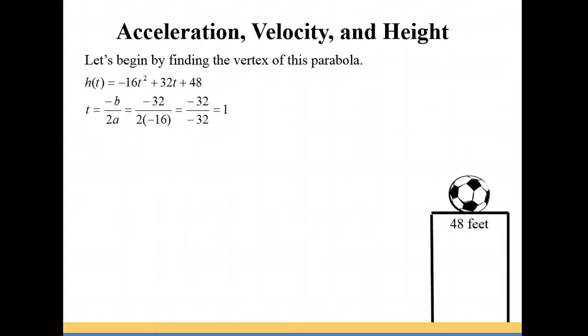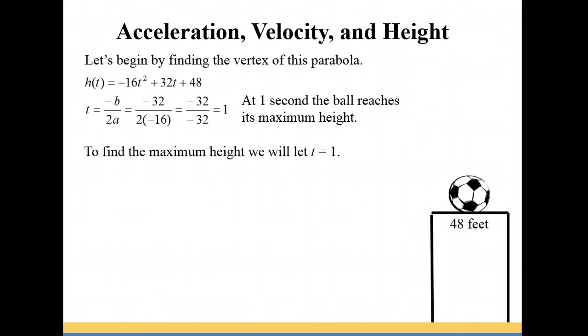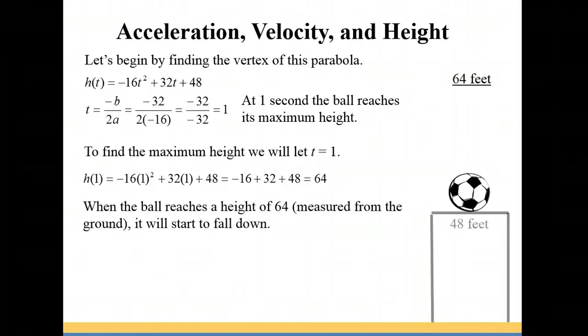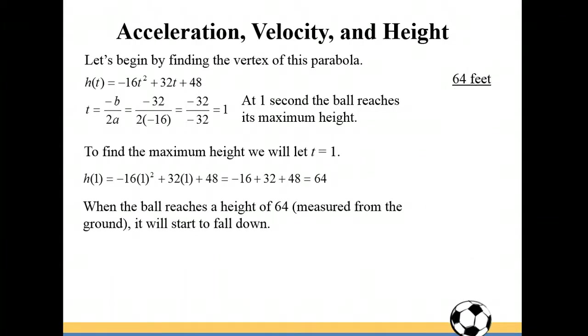Remember this is a quadratic with a leading coefficient that's negative. So your parabola is going to open down. To find the maximum height we're going to evaluate h(t) at 1. So plugging in a 1 we ended up with 64. That means 64 feet is the highest point that the ball is going to reach. Once it reaches 64 feet then it's going to fall down to the ground.